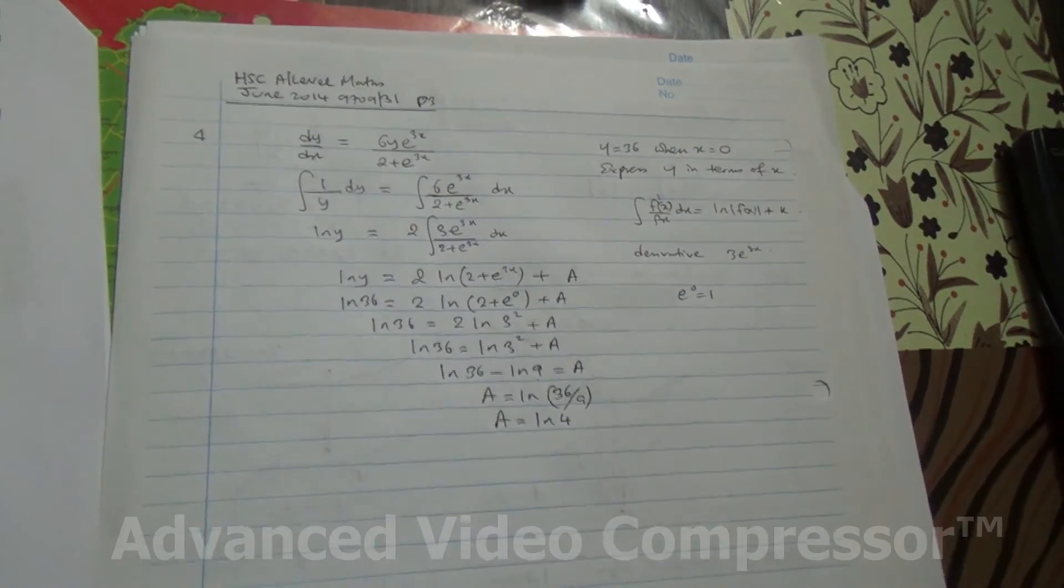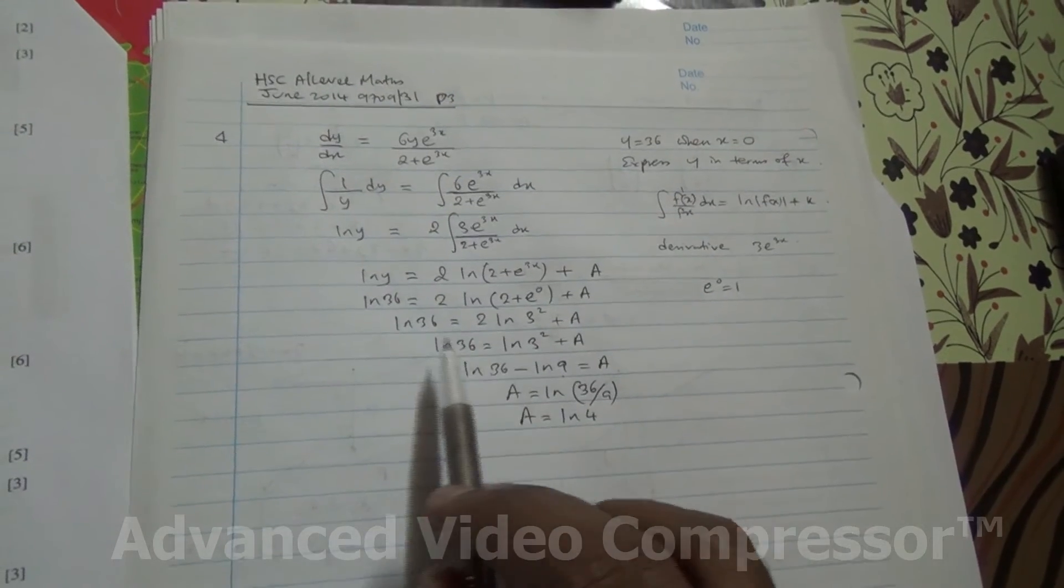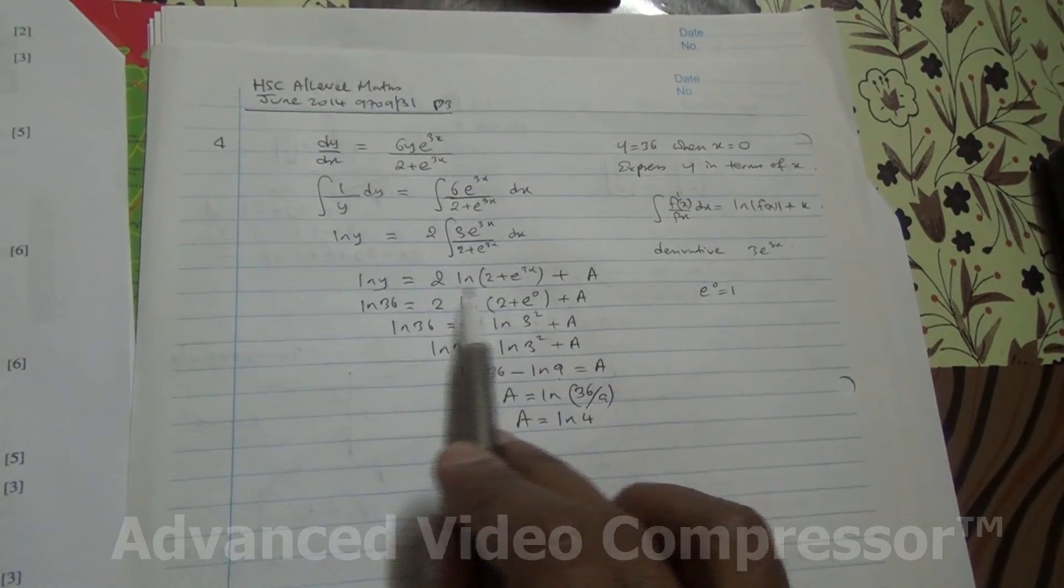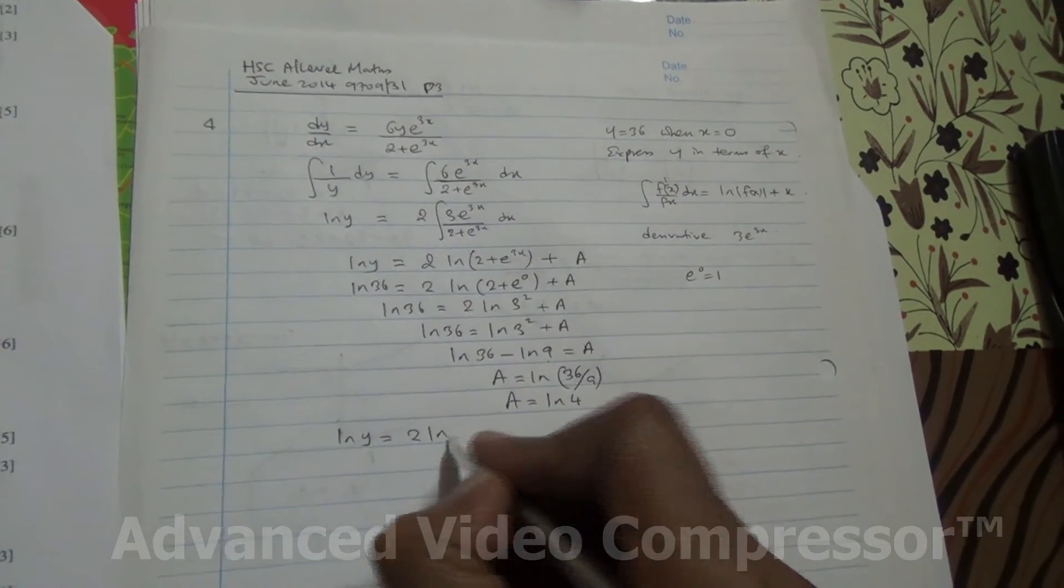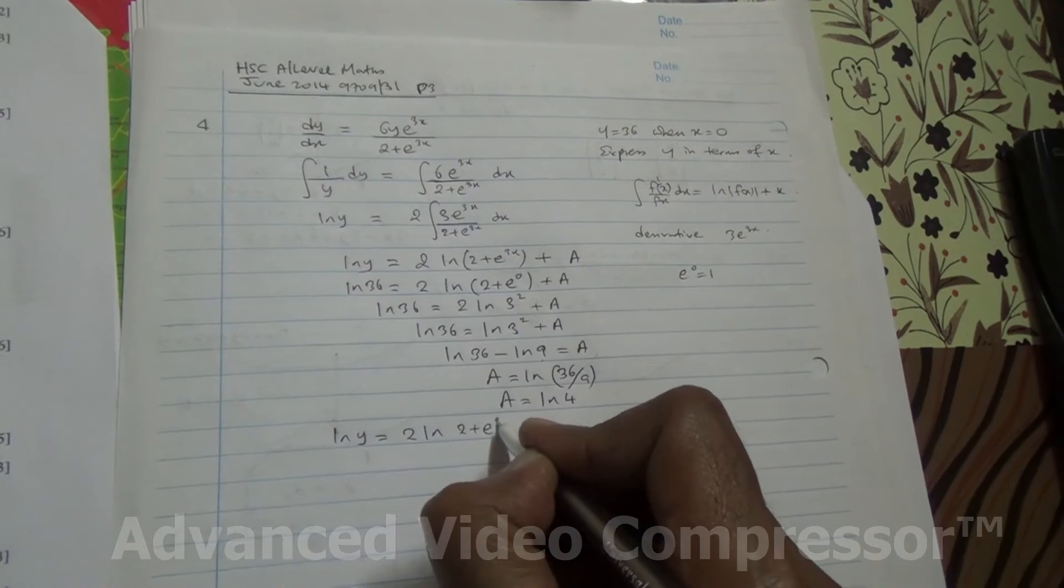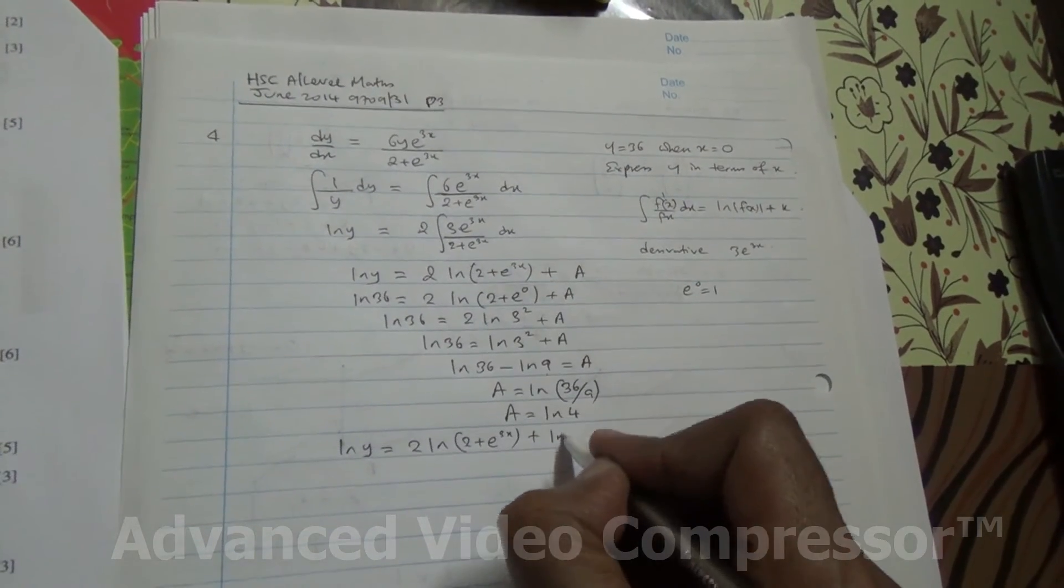Now, what is our equation, anyway? Our equation is here. So, we have ln y is equal to 2 ln 2 plus e to the 3x, plus a, and so plus ln 4.